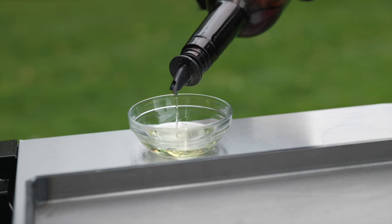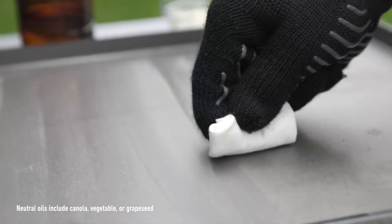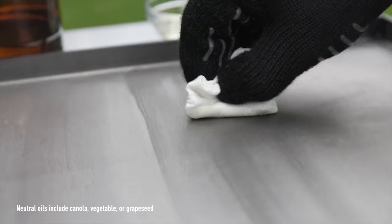Using a paper towel, apply one tablespoon of a neutral oil to all the surfaces of your flat top. Wipe off any excess oil so it appears dry.